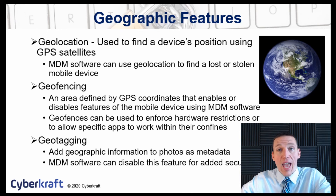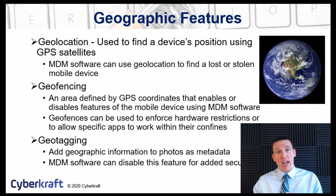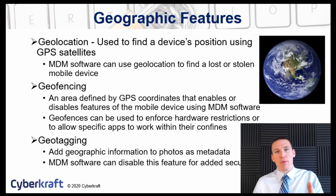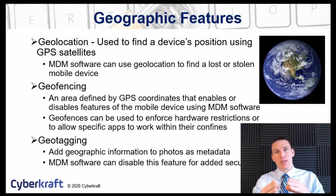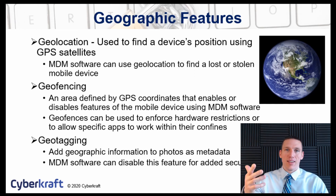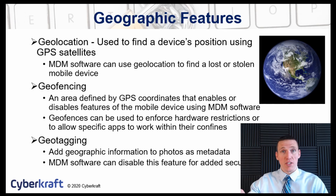Geotagging is a method of adding metadata to photos and files that states where the picture was taken. This can be a problem if an organization wants to keep a certain location secure. For example, the US government, which often uses Blackberry devices, may issue devices with geotagging disabled, because if a device is used to take a picture, you don't want a geotag associated with that picture — it can provide information to malicious actors.